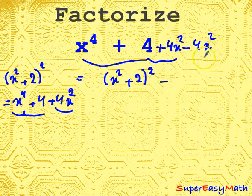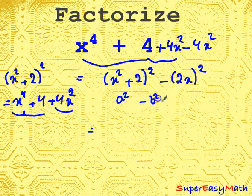And -4x^2 can be written as -(2x)^2. So now we have a^2 - b^2, which equals (a - b)(a + b).